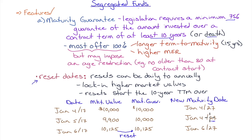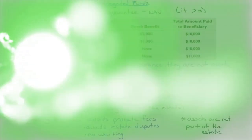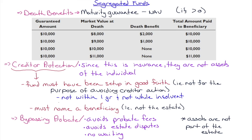When you reset the maturity guarantee to $10,125, the 10-year clock starts over — now your maturity date is January 6th, 2027. So if you're five years in and the market is up 30% and you lock in that gain, you get the higher maturity guarantee, but you now have a full 10 years to the new maturity date — not just five. You can always reset at higher and higher market values, but each reset pushes the maturity date further down the calendar.